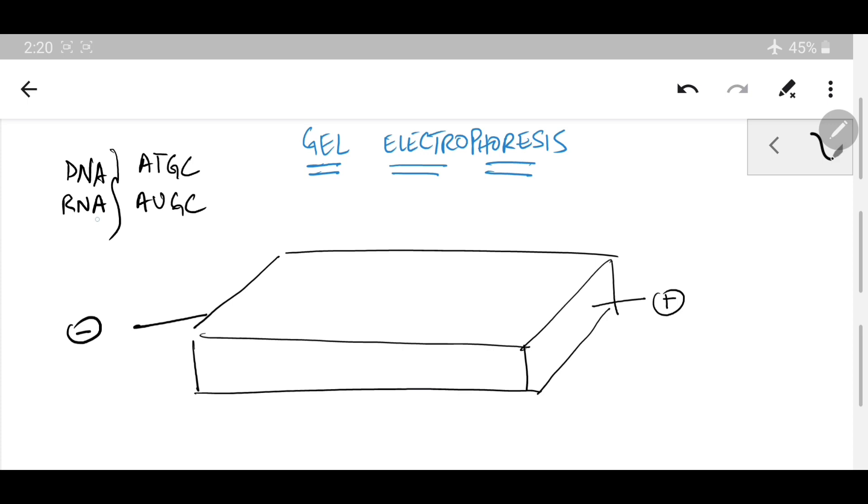So what that means is you would want your samples to be placed towards this end of the experiment. So that these samples, when placed in here, are able to move towards the positively charged plate, right? So this is going to be our movement, the direction of movement for our samples.